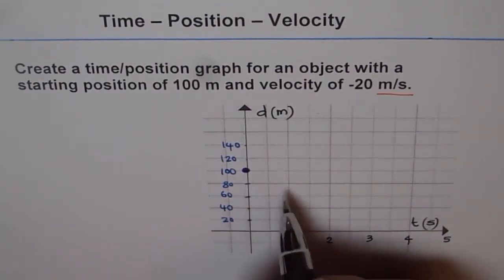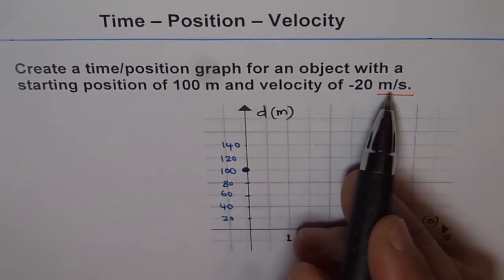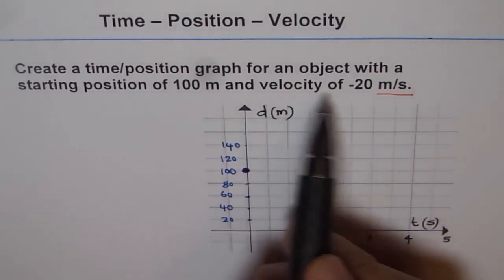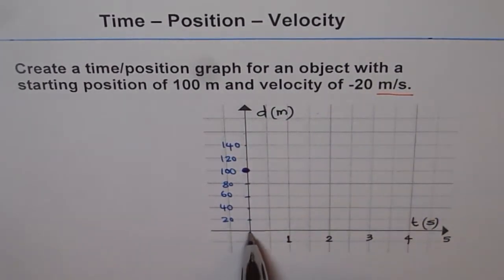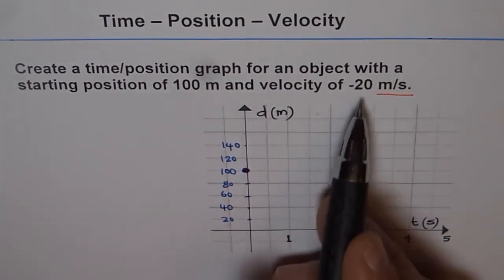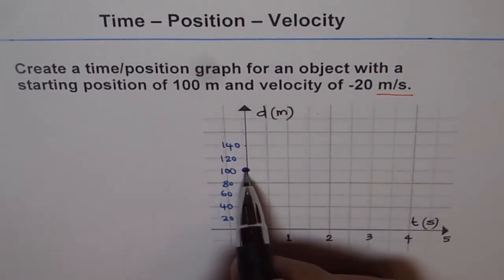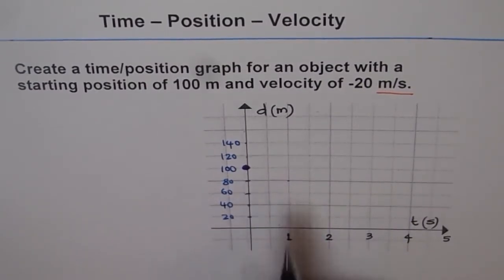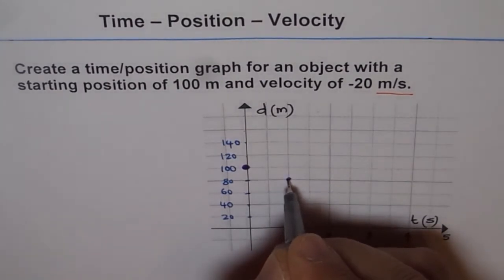So every second, the object is coming closer by 20 meters. That is what is meant by velocity. Change in distance per time. So per second, change in distance is minus 20. So in one second, the distance decreases by 20. That means it comes from 100 to 80. So that becomes our position after one second.